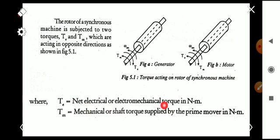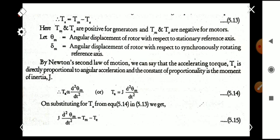The rotor of a synchronous machine is subjected to two different torques: T_E and T_M. T_E is the net electrical or electromagnetic torque in Newton-meters, and T_M is the mechanical or shaft torque supplied by the prime mover. Under steady-state operating conditions, T_E and T_M are equal and the machine runs at synchronous speed. If there is a difference between these two torques, the rotor will have an accelerating or decelerating torque, denoted P_A — the net accelerating torque.